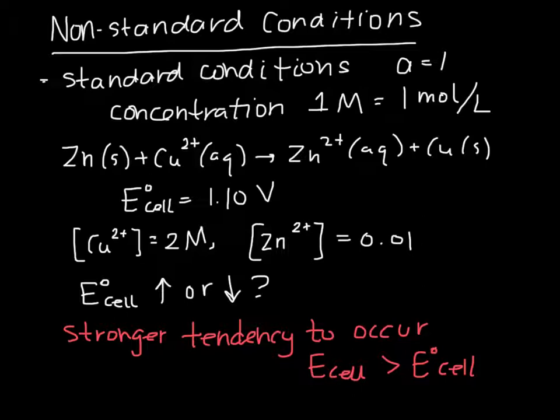Let's find a mathematical relationship between the cell potential and the standard cell potential, and this is what is known as the Nernst equation.